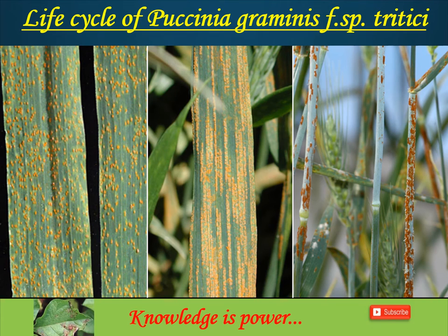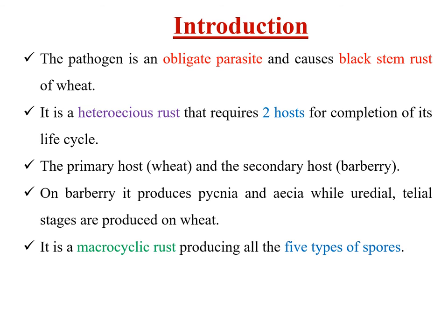Welcome to today's lecture where we are going to learn about the life cycle of Puccinia graminis forma specialis tritici, causing black stem rust disease in wheat. This pathogen is an obligate parasite and a heteroecious rust pathogen, meaning it requires two hosts to complete the life cycle.